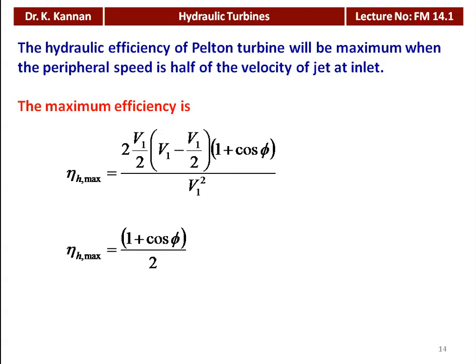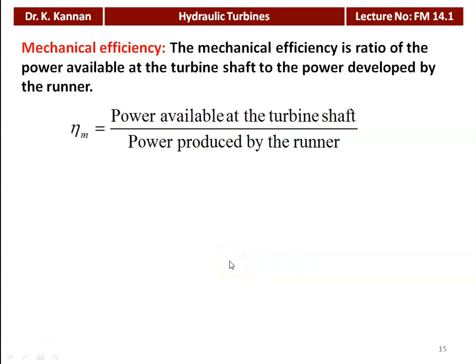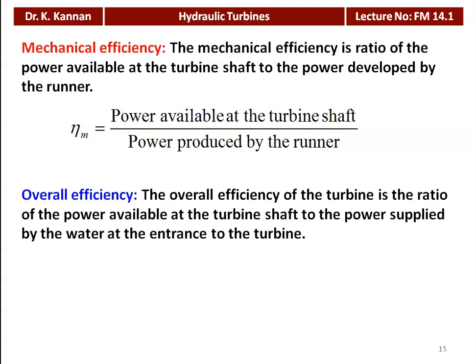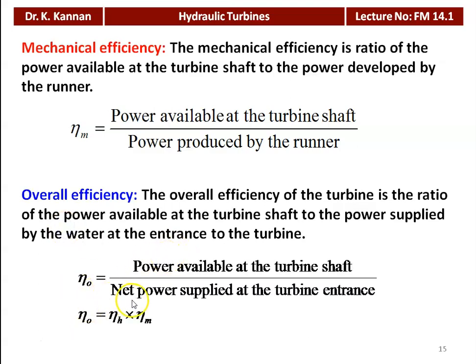The mechanical efficiency of the Pelton turbine is the ratio of power available at the turbine shaft to the power developed by the runner — it accounts for frictional losses in the runner, shaft, and end bearings. The overall efficiency = power available at turbine shaft / net power supplied to the turbine at entrance = hydraulic efficiency × mechanical efficiency.